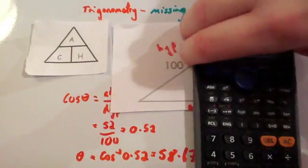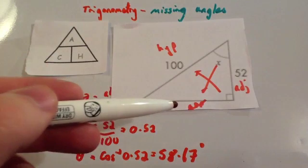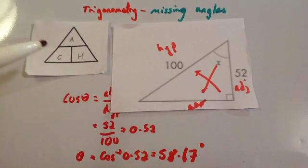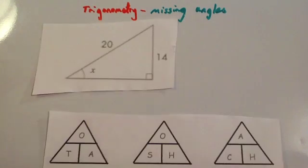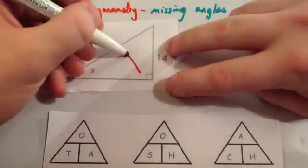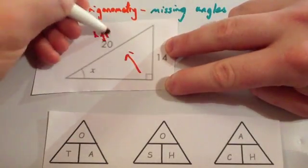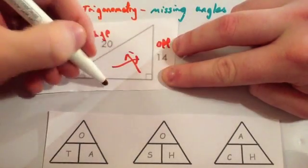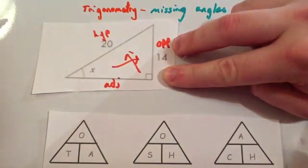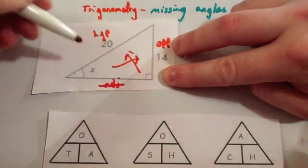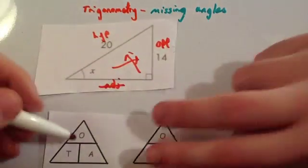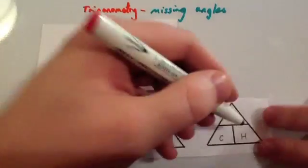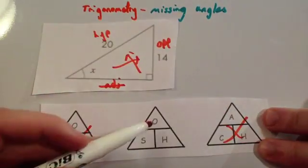So just to recap the steps: label the sides, cross off the sides you don't want, select that triangle, substitute in the numbers, then do the shift cos. And our last example: we've got a right angle triangle. Let's label the sides — the hypotenuse, the opposite, and the last left over side which is the adjacent. This time the adjacent hasn't been given to you and hasn't been asked for, so we've got the opposite and the hypotenuse. We're going to be using 'skipped over heaven' — the sine triangle.